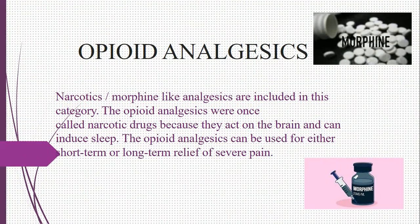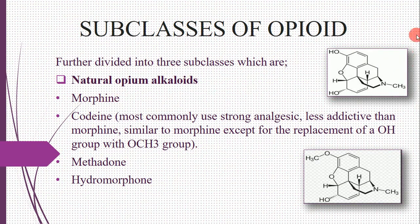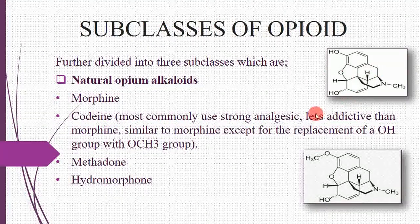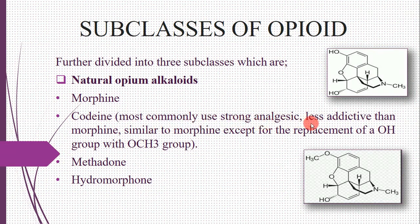The subclasses of opiates are classified into three groups. The first is natural opium alkaloids — looking at the structure-activity relationship, the first example is morphine and the second is codeine. Codeine is a commonly used strong analgesic, less sedative than morphine, and is similar to morphine except for replacement of a hydroxyl group with a methyl group.